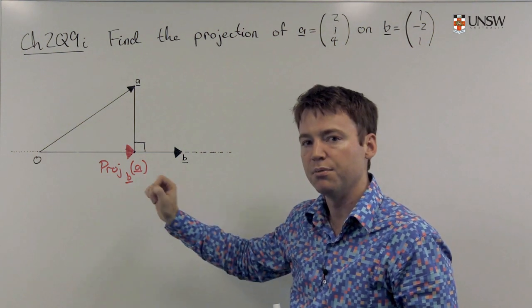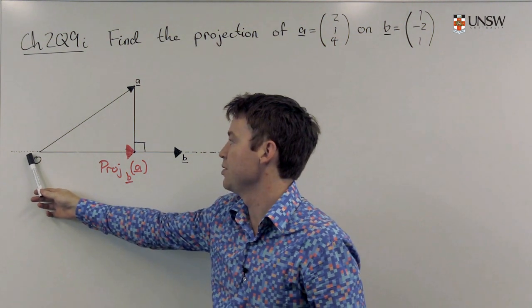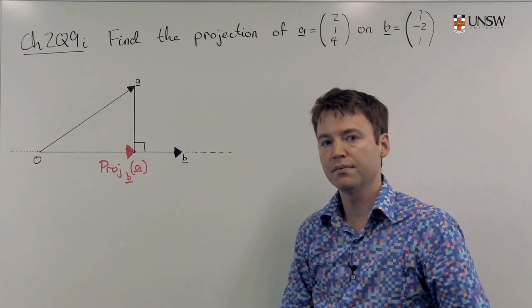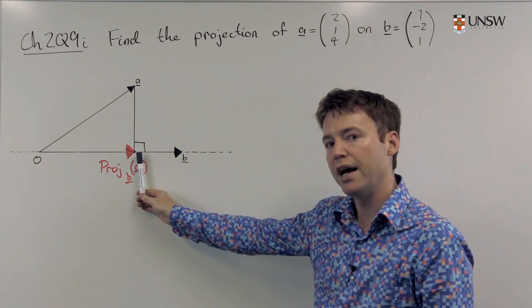Geometrically, the projection looks like this. You have the line through the origin and b, and the projection is the point on this line closest to a.